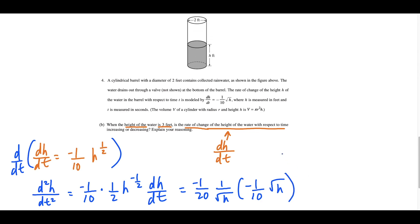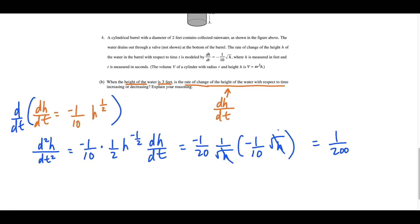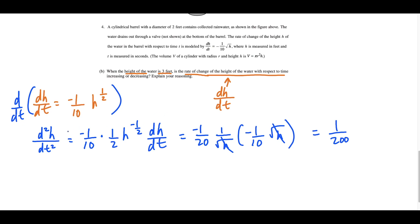Since h is greater than zero in this context, we don't need to worry about square roots of zero or negatives, so the √h terms cancel and d²h/dt² equals positive 1 over 200. Since the second derivative is always equal to 1/200 when h is greater than zero, we can conclude that the rate of change of the height of water with respect to time is increasing.